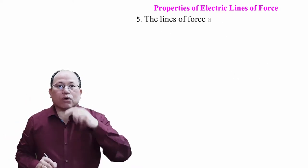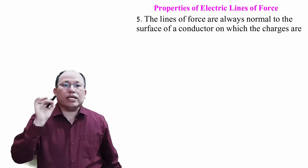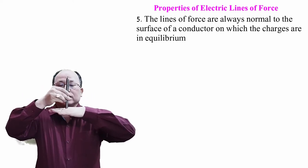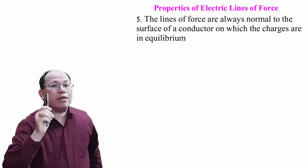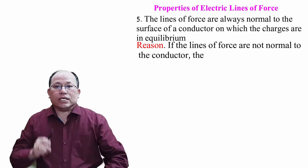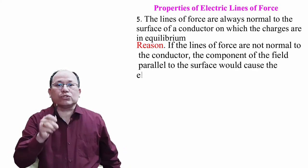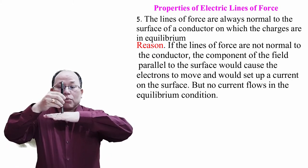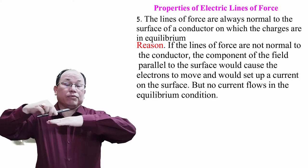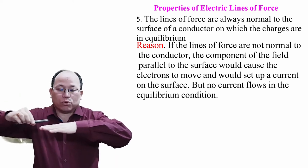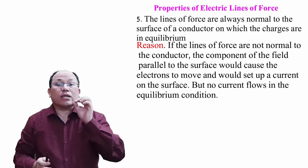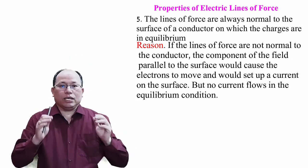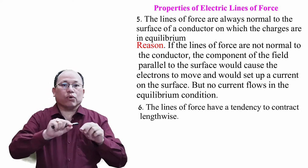Next property: the lines of force are always normal to the surface of a conductor on which the charges are in equilibrium. This is important — if the lines of force were not normal to the conductor, the component of the electric field parallel to the surface would cause electrons to move and set up a current. But no current flows in equilibrium, so lines of force must be perpendicular to the conductor surface.